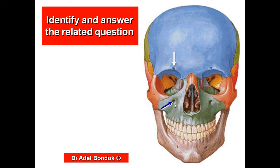This is the infraorbital foramen. It transmits the infraorbital nerve and vessels. The infraorbital nerve is the continuation of the maxillary nerve. The infraorbital artery is a branch from the maxillary artery.